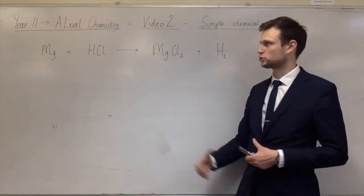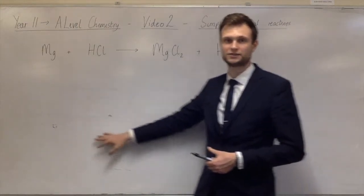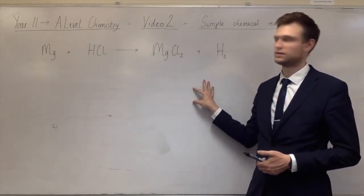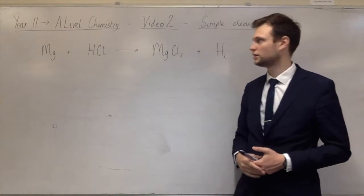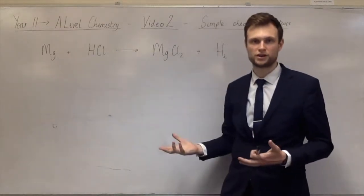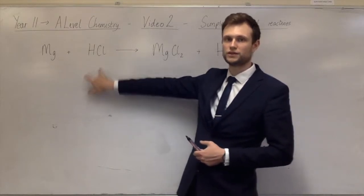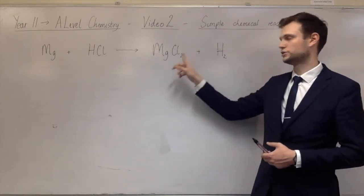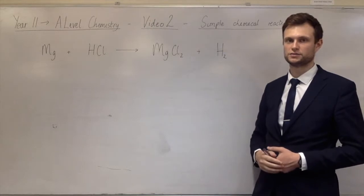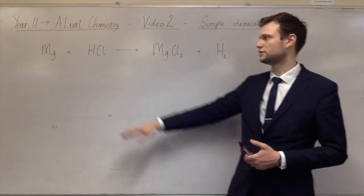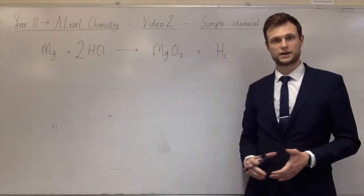To balance it, you need to make sure the atoms on the left-hand side are the same as the atoms on the right-hand side. So we've got 3 different elements. Magnesium, there's 1 of each on both sides. So that's balanced already. Hydrogen and chlorine, though. There's 1 of each on this side. And then 2 hydrogens and 2 chlorines on this side. So that makes sense that you need 2 HCl. And now that's balanced.